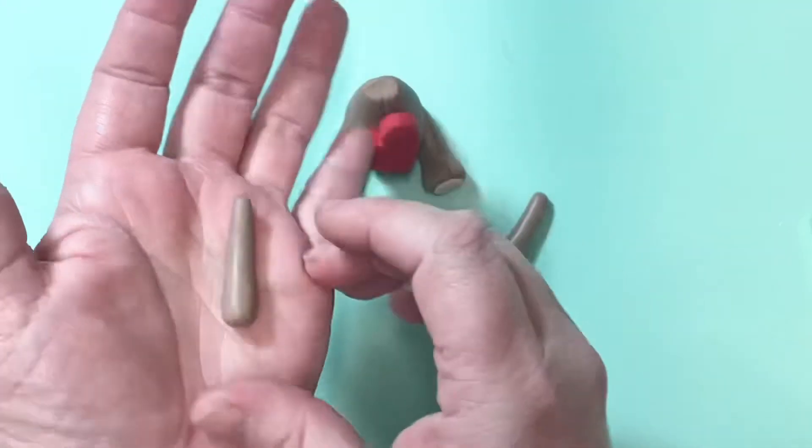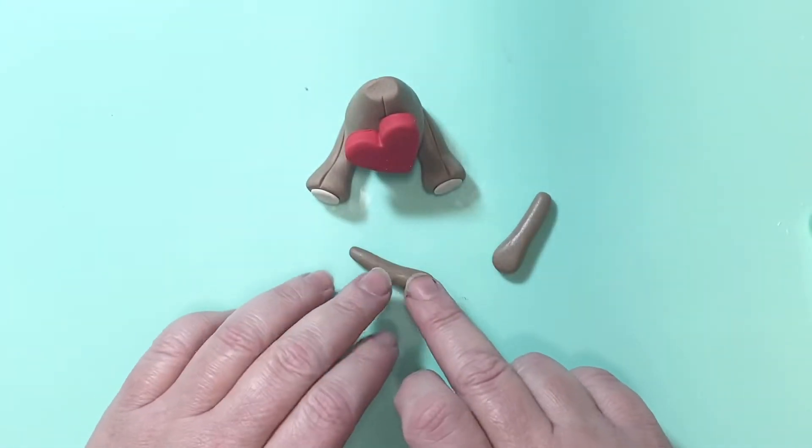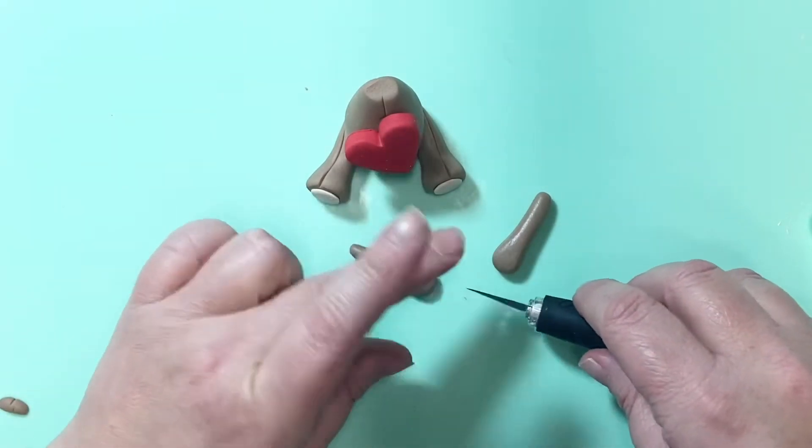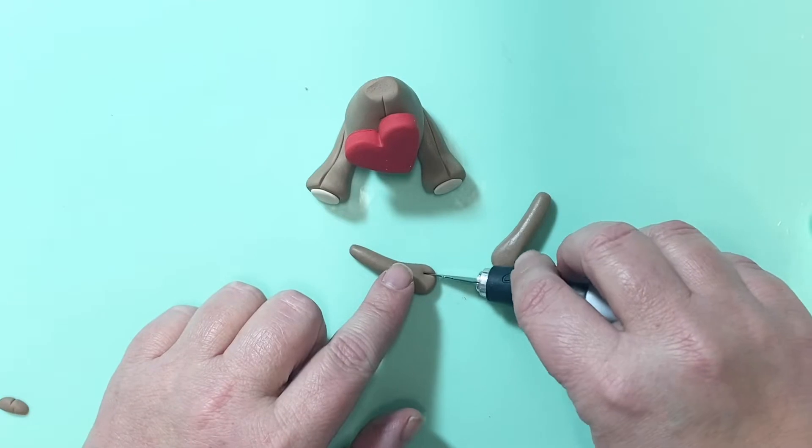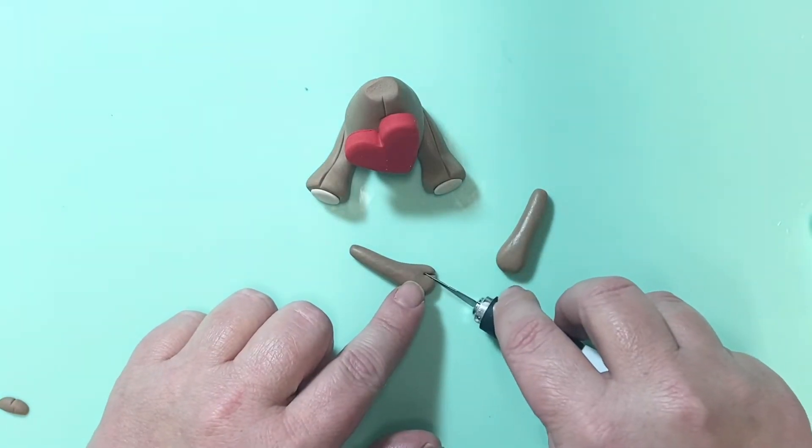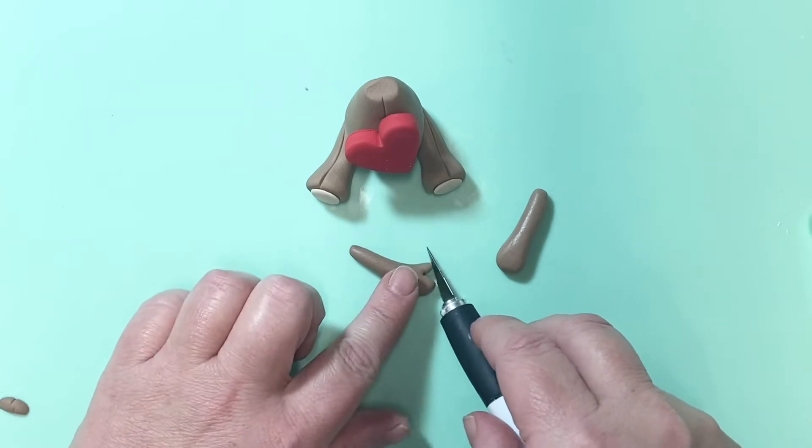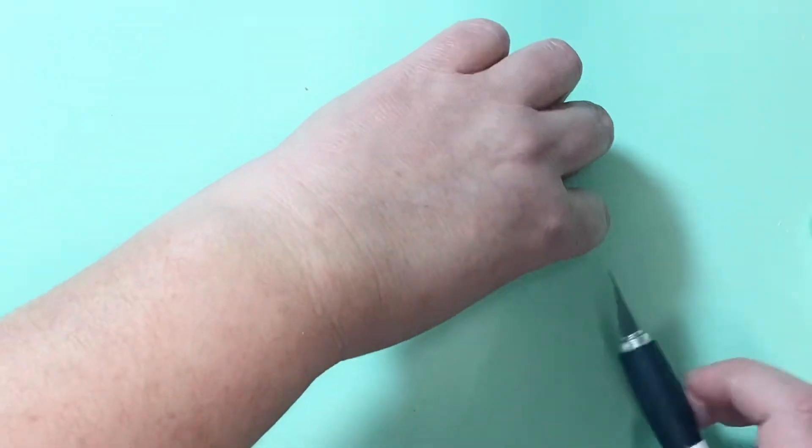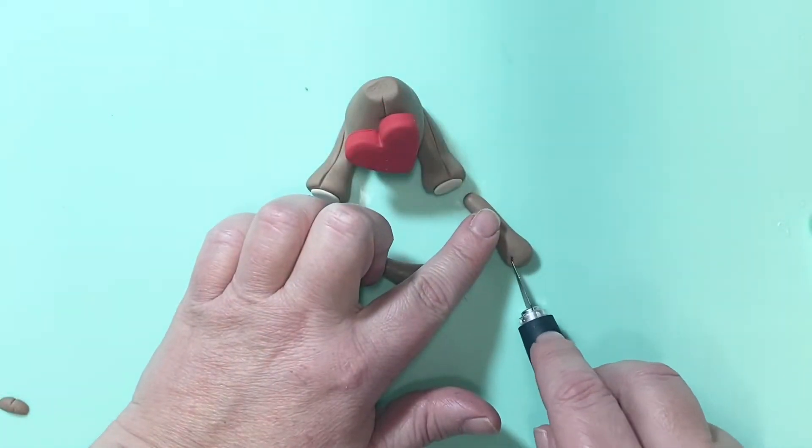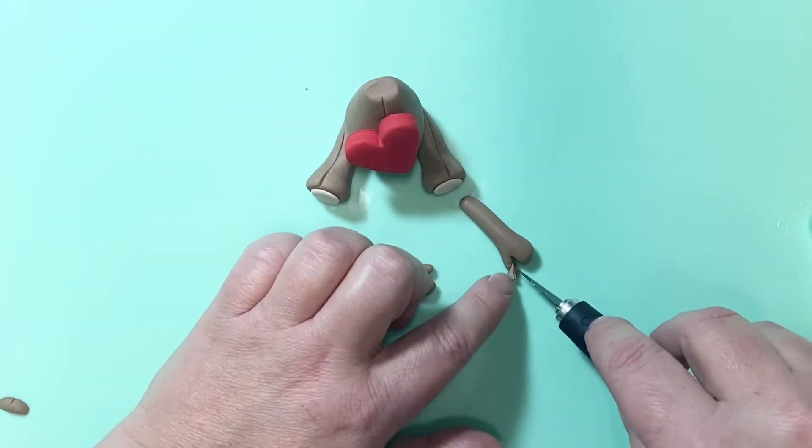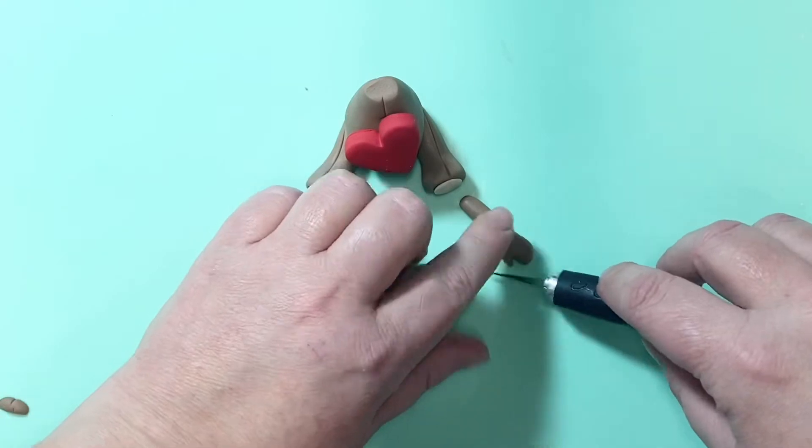If the paste does get a little bit too tacky for you to work with, just set it aside for 30 seconds and try again. It sometimes just needs to be firmed up a little bit. Now I've got a craft knife and I wanted to make a little thumb on this, so just cut a V out, and then I use my craft knife just to round the edges a little bit on the palm or the paw so that your arms are ready to add to your bear.